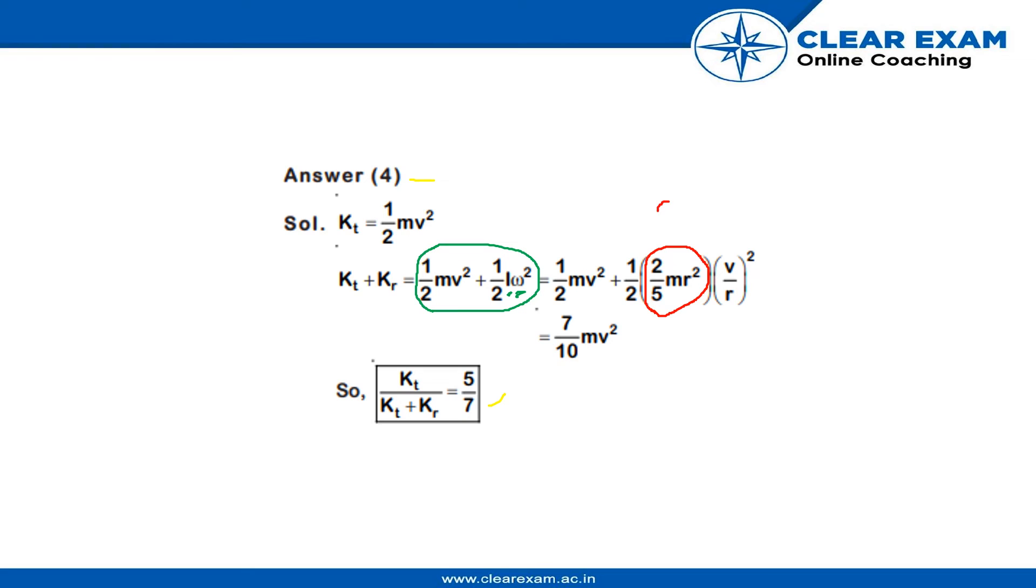So, half MV squared plus 1 by 2, 2 by 5 MR squared. And for omega, omega equals V by R.